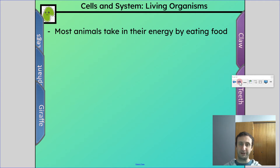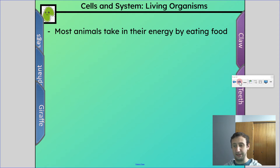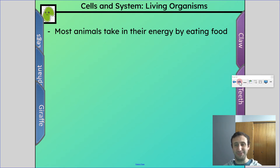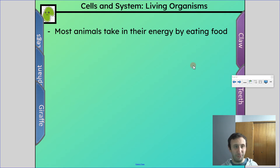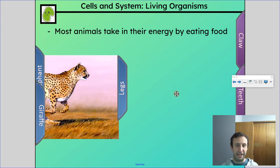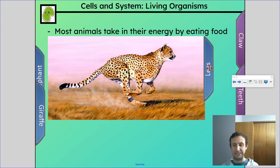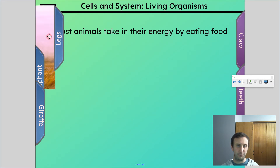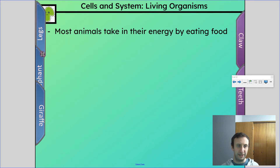Animals get their energy by eating food, and they have different structures to help with that. For example, legs — they need legs in order to catch their food. Of course this would be different for other animals, but these are just examples.